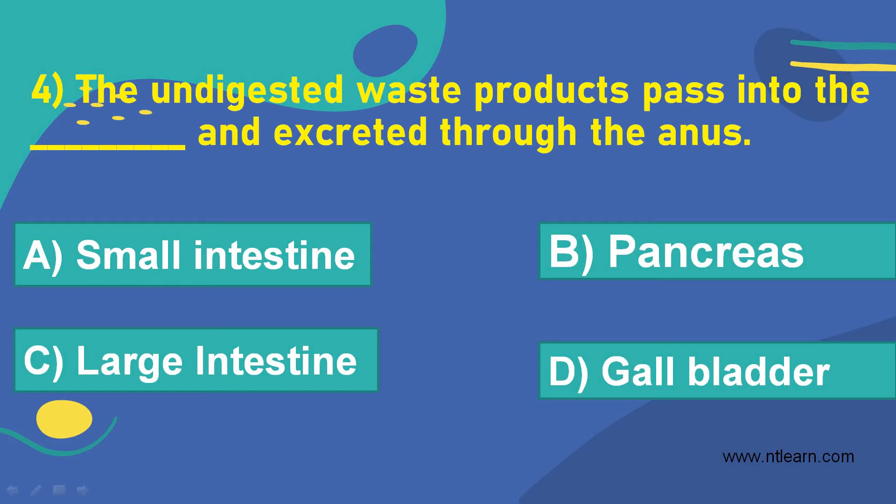Let's move on to the next question. The undigested waste products pass into the dash and are excreted through the anus. Option A, small intestine. Option B, pancreas. Option C, large intestine. Option D, gallbladder.